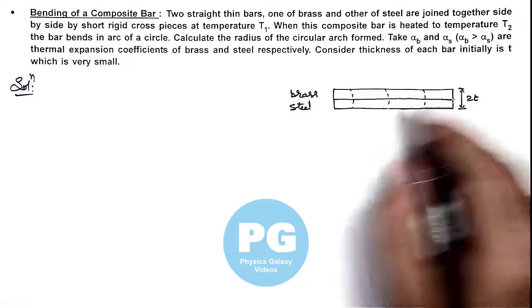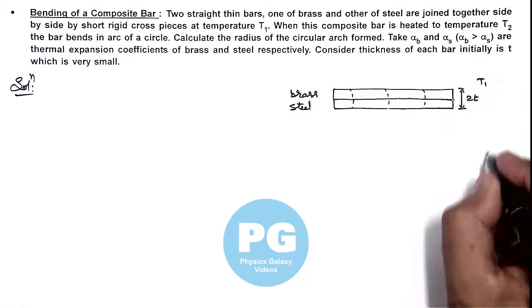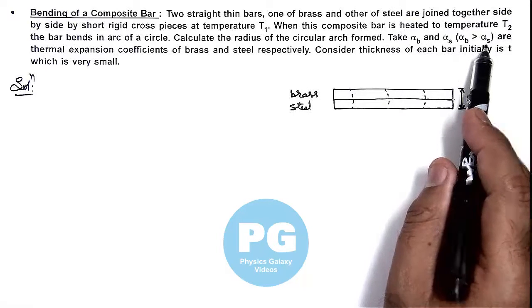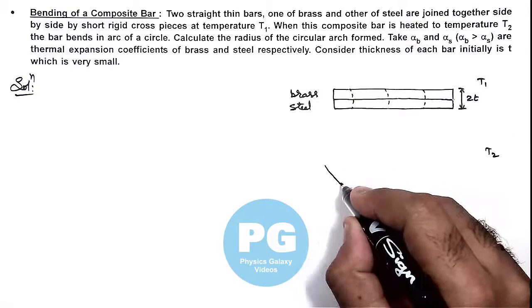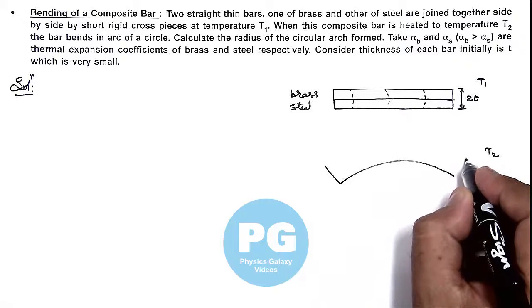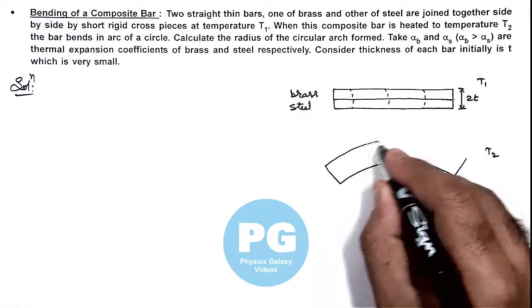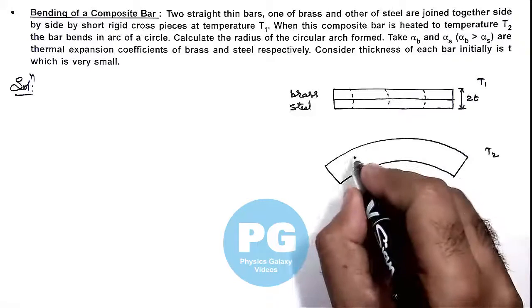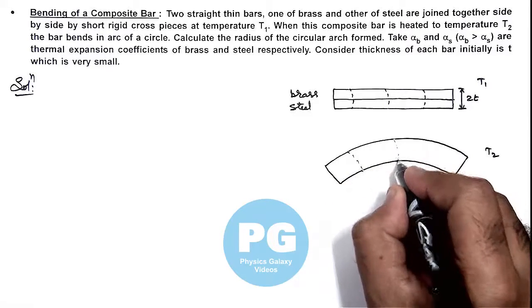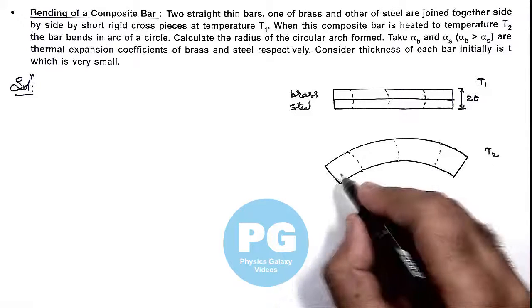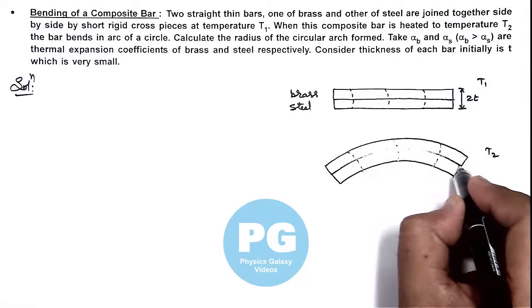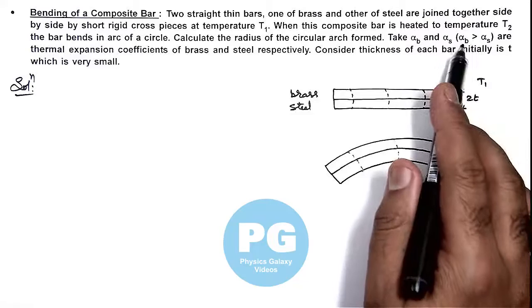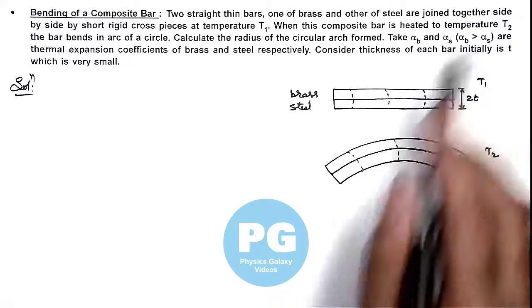When the temperature from T1 is heated to T2, obviously as we are given that alpha for brass is greater than that of alpha of steel, it'll bend in the form of a circular arc like this, because the brass bar will expand more. And since they are joined by rigid cross pieces, the two bars are not allowed to separate. So due to these cross pieces, the bars will bend like this. Here we can see the length of the brass bar will be more and that of the steel bar is less, because alpha of brass is given as greater than alpha of steel.